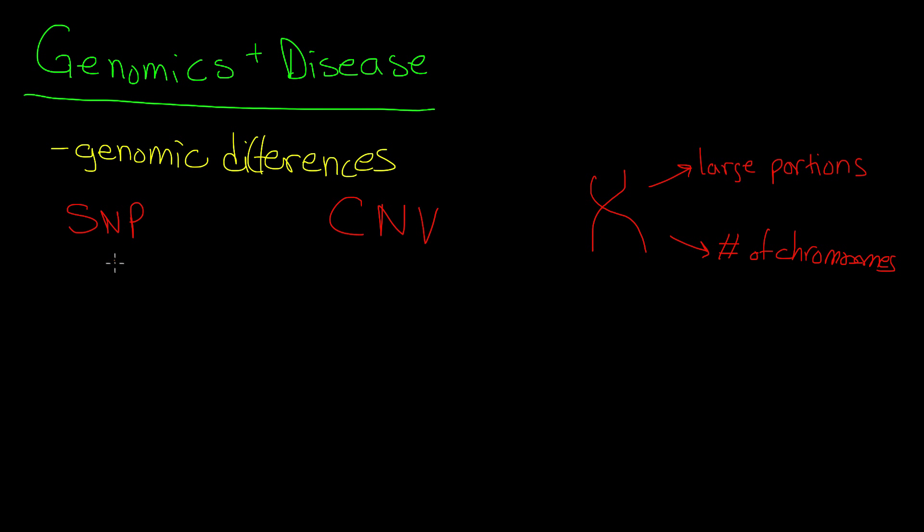A classic example of the SNP is sickle cell anemia. We talked about the SNP as a messed up base pair. There was a mistake made. And with sickle cell anemia, what happens is that hemoglobin gets deformed, and you have issues with transporting oxygen throughout the body, which can be a big problem for organs, which require oxygen to function for cellular respiration.